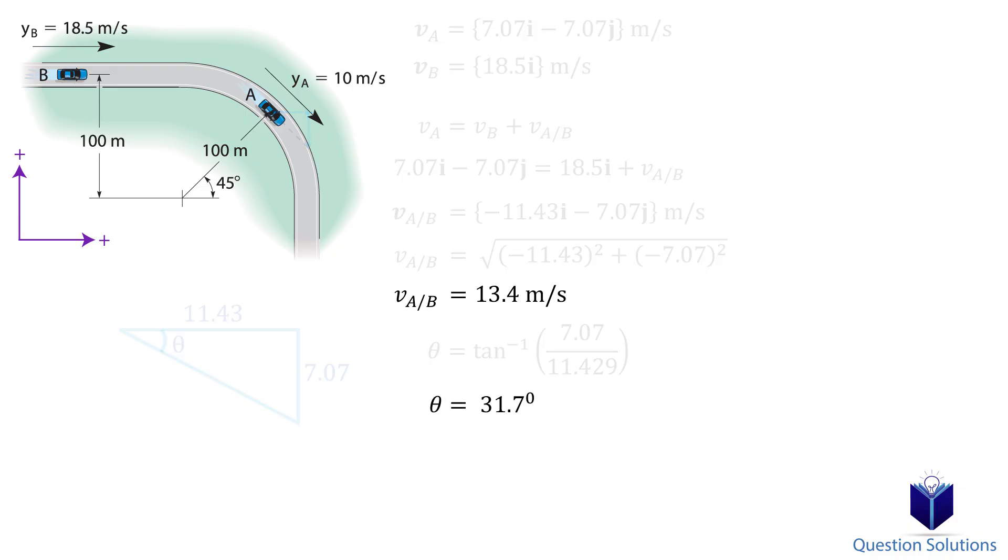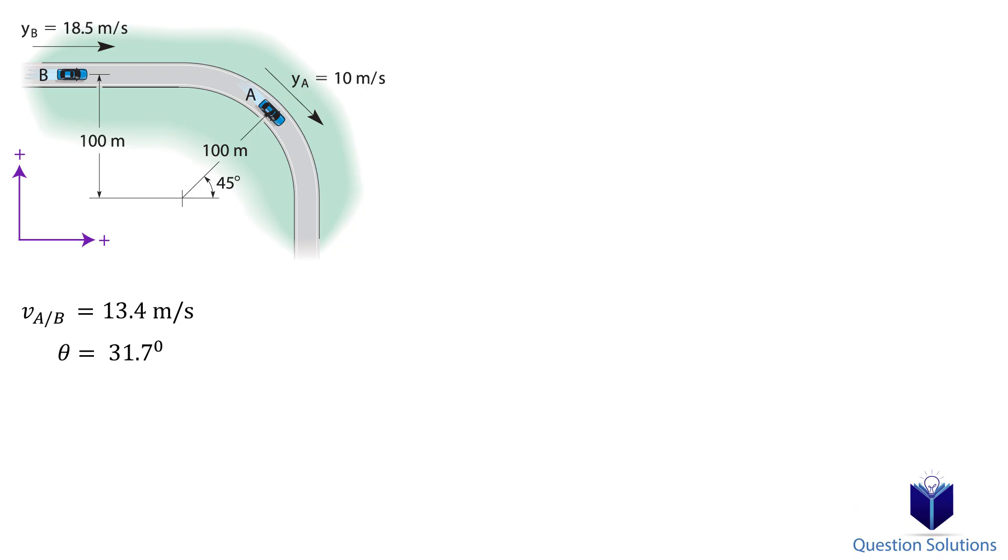Now we can focus on acceleration. Since car A is going along a curve, we will have a normal acceleration along with a tangential acceleration. The tangential acceleration is given to us in the question which is 5 meters per second squared.